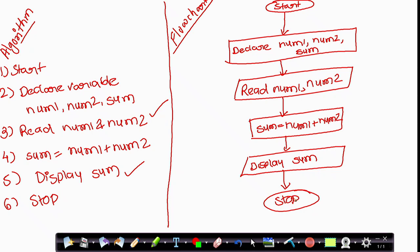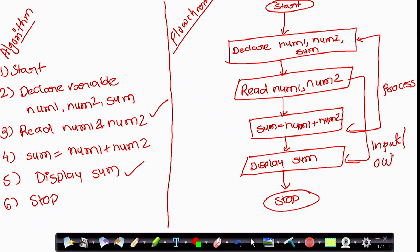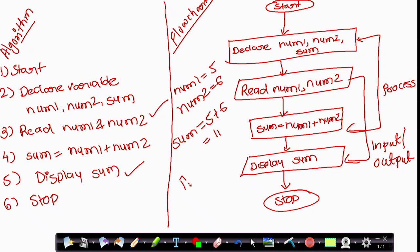So this is the flowchart for adding two numbers. The rectangle boxes represent processes, and the parallelogram shapes are used for input and output. To walk through how it executes: first, three variables are declared; then we input num1 and num2 — suppose num1 equals 5 and num2 equals 6. Then sum equals num1 plus num2, so sum equals 5 plus 6, which is 11. Then we display sum.